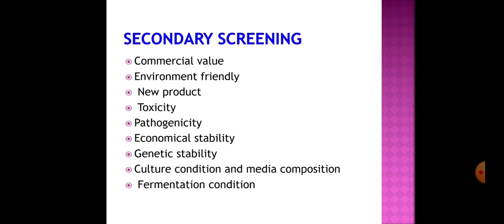The second stage is secondary screening. Once a desirable microorganism is obtained, it is necessary to assess its commercial value and determine whether it is environmentally friendly, whether it produces toxicities, and whether it is pathogenic. It is also important to know if new products are being produced and what the economic stability of these organisms is. Genetic stability is essential to assess at this stage, as microorganisms tend to mutate frequently. Cultural conditions, media composition, and fermentation conditions are also determined at secondary screening.